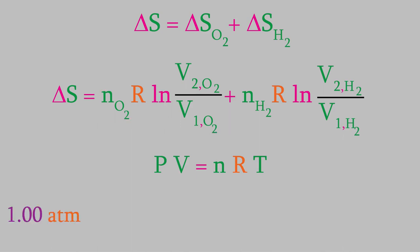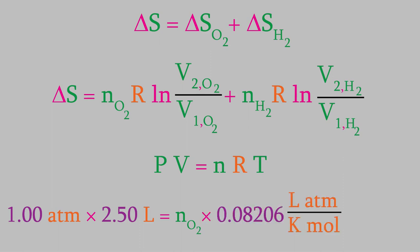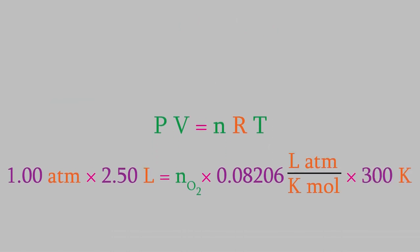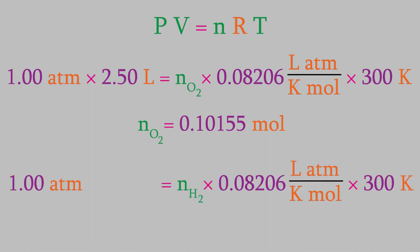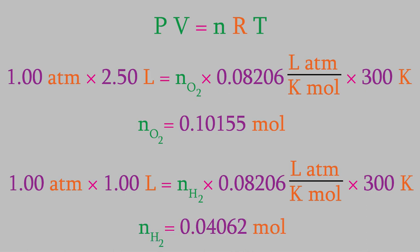We know the pressure is 1.00 atmospheres, and the volume is originally 2.50 liters. R is the gas law constant, and you might remember it has a value of 0.08206 liters atmospheres over Kelvin moles. The temperature is 300 Kelvin. If we plug all these into the ideal gas law, we find that there are 0.10155 moles of oxygen. In the same way, we can determine the moles of hydrogen. The pressure and temperature are the same — 1.00 atmospheres and 300 Kelvin — but the volume this time is only 1.00 liters, giving us 0.04062 moles of hydrogen.